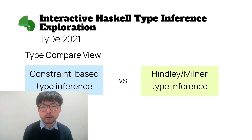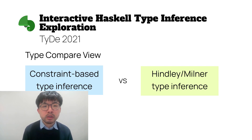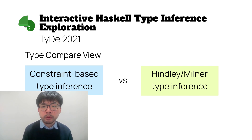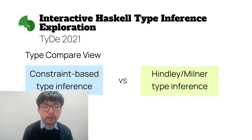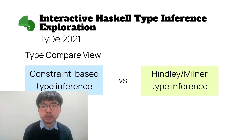The type compare view does not rely on syntax. It continuously shrinks the constraint set until it reaches minimal unsatisfiability. From the remaining constraints, we can populate all the information we need to power the Chameleon debugging interface.